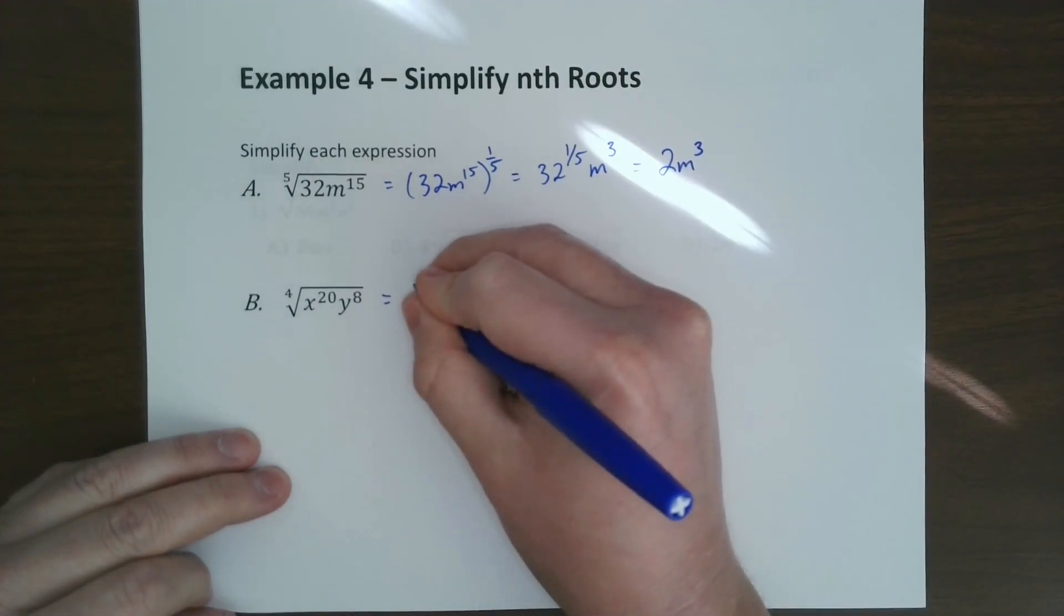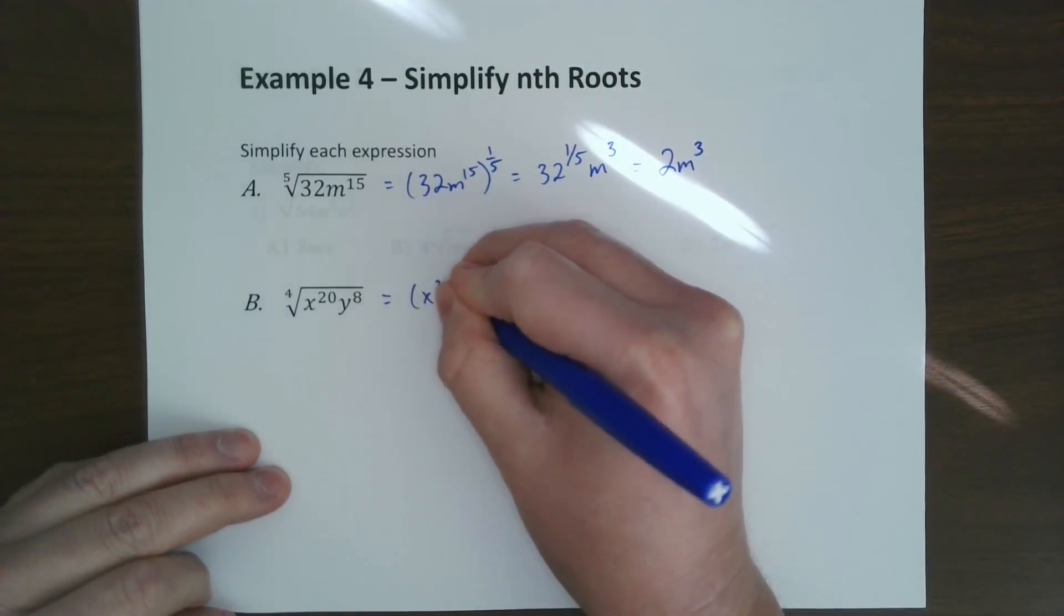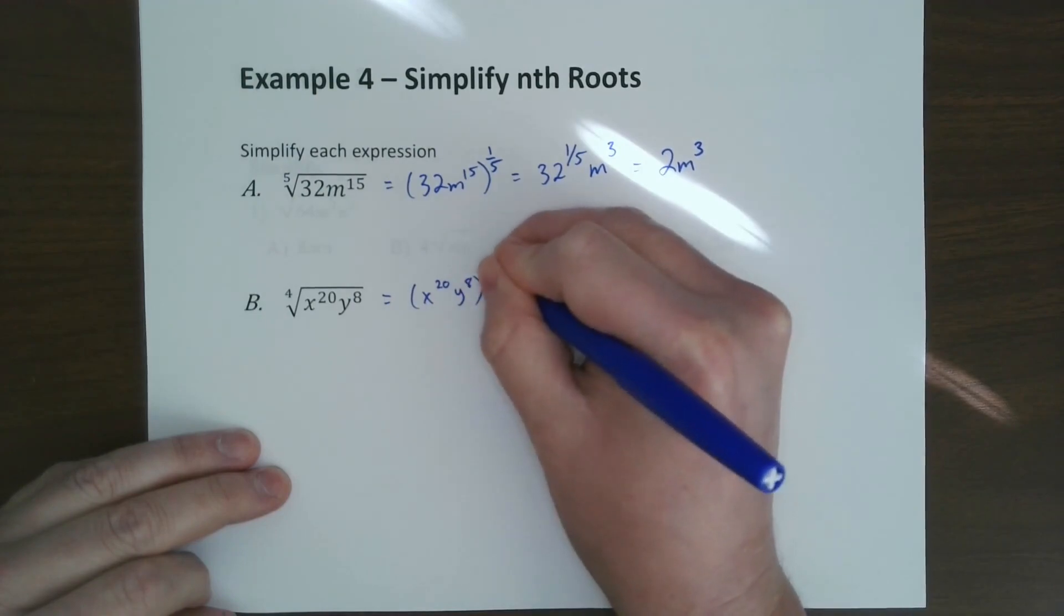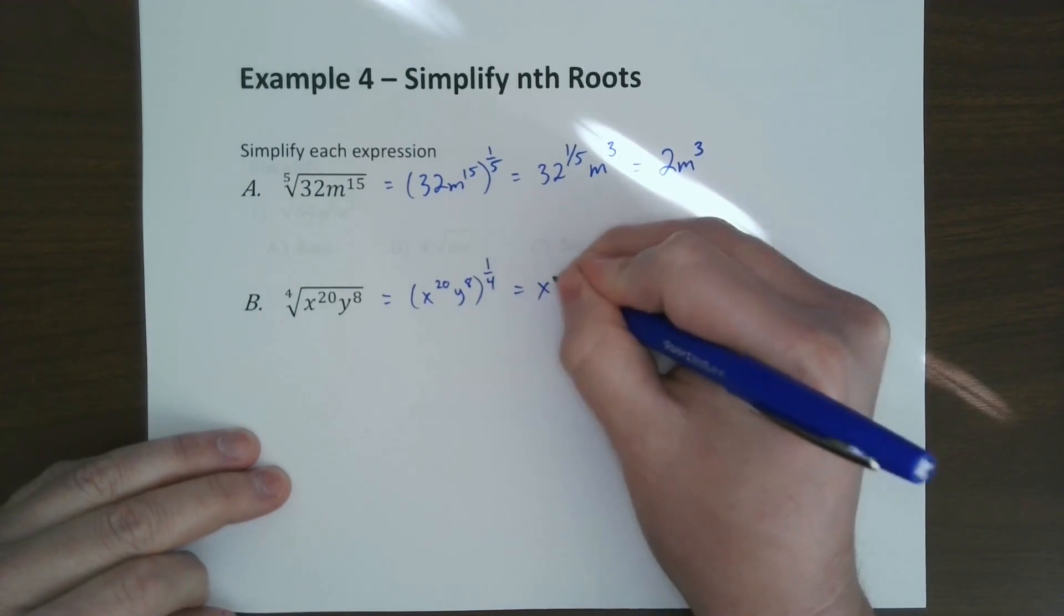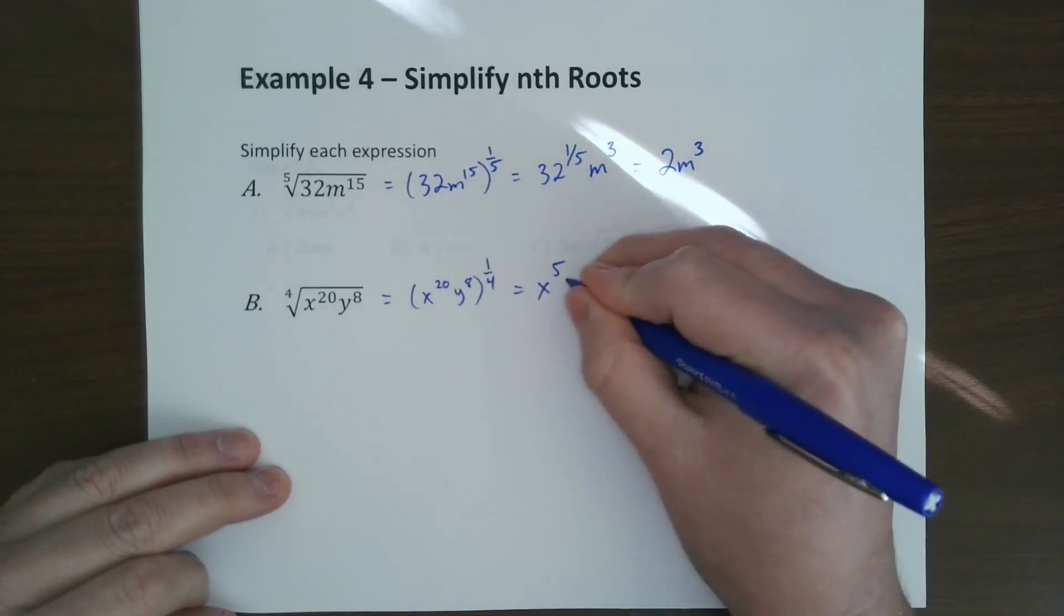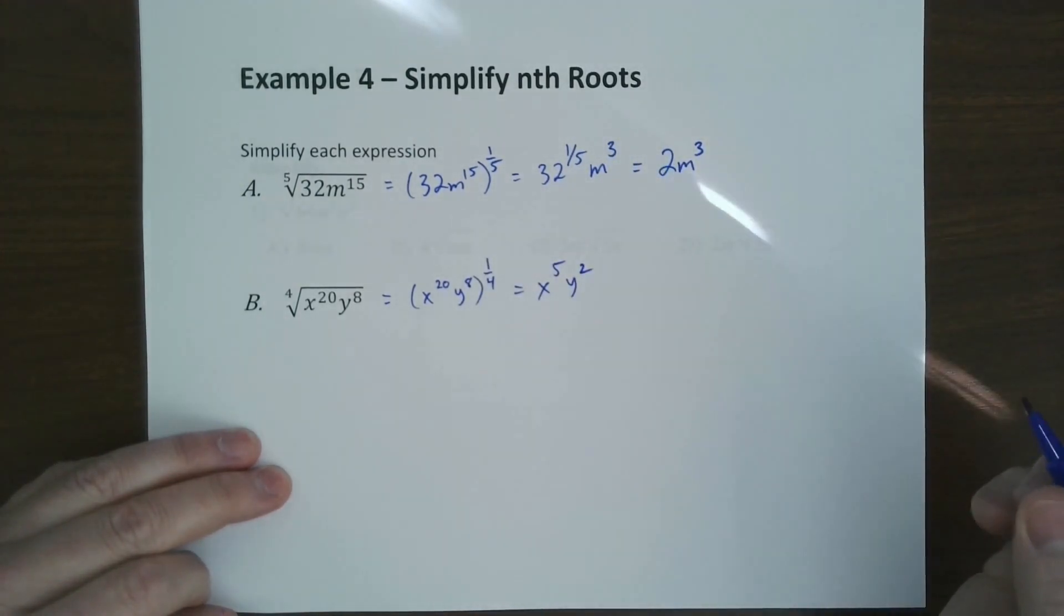Same with this one. We write whatever's on the inside, and we're going to take it to the one-fourth. One-fourth of 20 is 5. One-fourth of 8 is 2. And that's it.